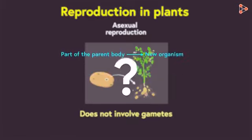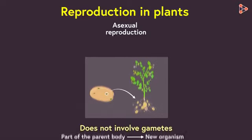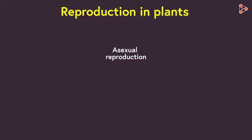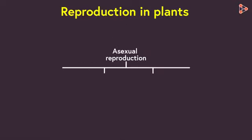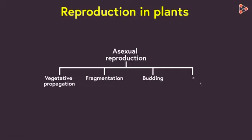But which part of the parent body will grow into a new organism? Based on various factors, asexual reproduction is further categorized into subtypes. A few of these include vegetative propagation, fragmentation, budding, and spore formation. Let's get introduced to each type in detail in the upcoming videos.